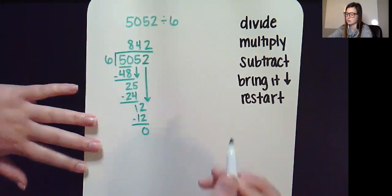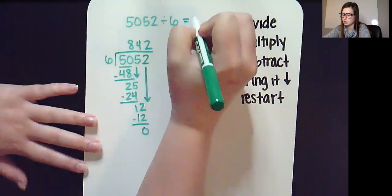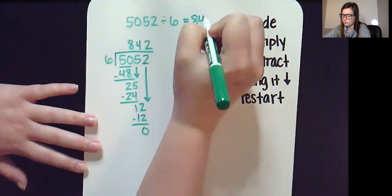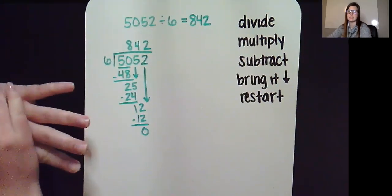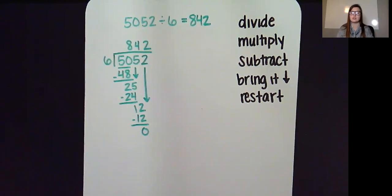Leave me with 0. Nothing left to bring down, so I am finished. 5052 divided by 6 gives you a quotient of 842.